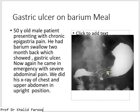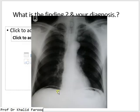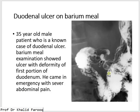Here we have a barium meal examination where contrast outlines the stomach and duodenum. This is the area where we can see an ulcer with radiating mucosal folds. This patient came with a history of acute pain, and on X-ray of the chest and upper abdomen we can see air under both hemidiaphragms, suggesting perforation.